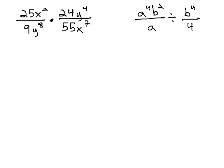In this first expression, 25x squared over 9y to the 8th, times 24y to the 4th over 55x to the 7th, we can simplify the numbers like we would simplify doing any multiplication of fraction problem.